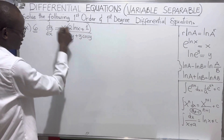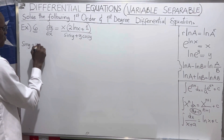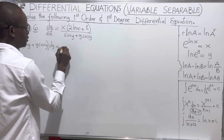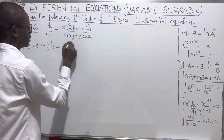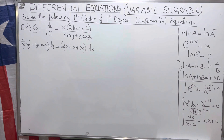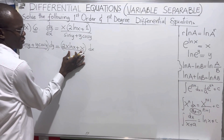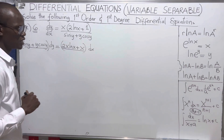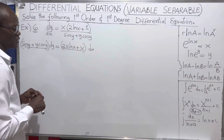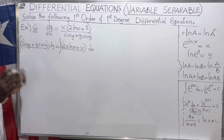The first thing we do is cross-multiply. So we have sin(y) plus y·cos(y) times dy equals x·ln(x) plus x times dx. We can clearly see that all of the expressions have been separated — those in x are on the right side and those in y are on the left side. There is no need for further simplification or factoring.